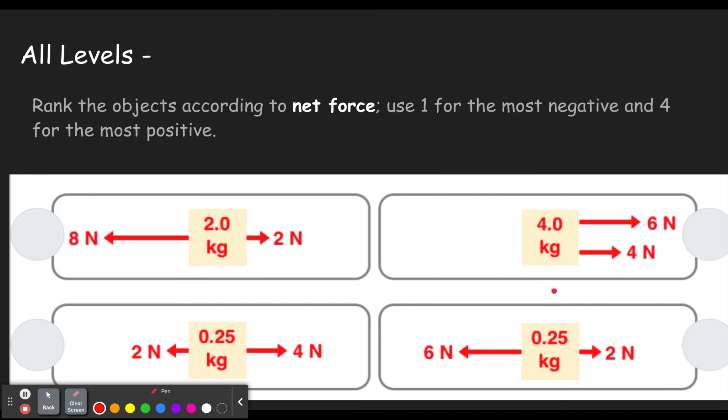Okay, so rank the objects according to net force. Use 1 for the most negative and 4 for the most positive. So remember, everything that's pulling left, left has been defined as our negative direction. Everything pulling left is negative.